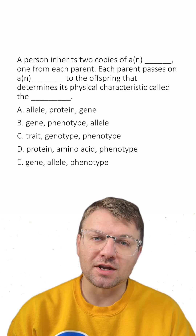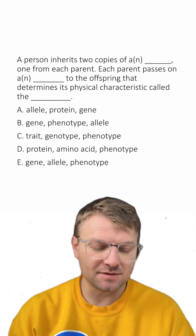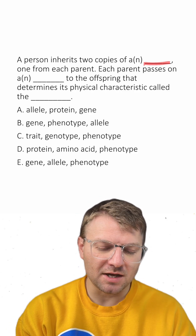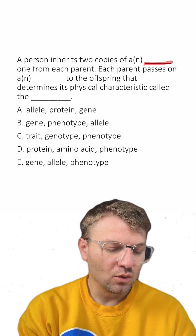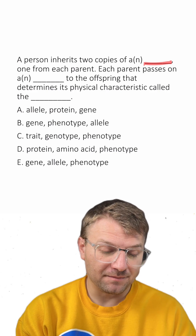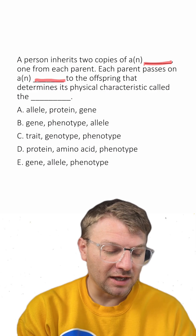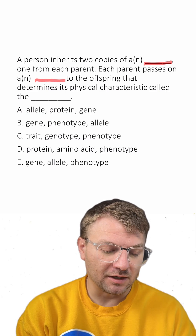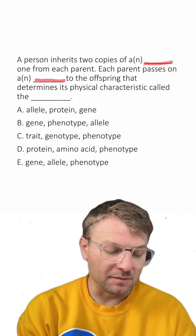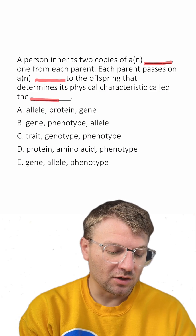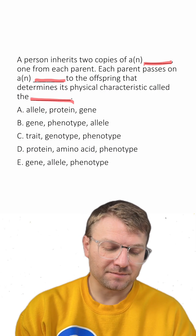Let's go over this multiple choice question about genetics. A person inherits two copies of a blank, one from each parent. Each parent passes on a blank to the offspring that determines its physical characteristic called the blank.